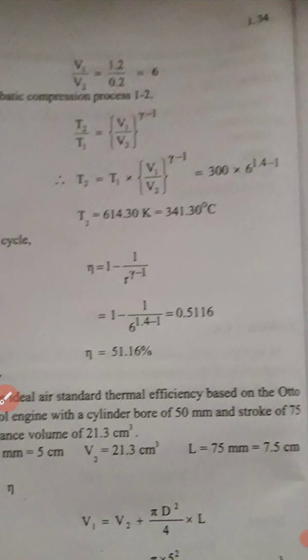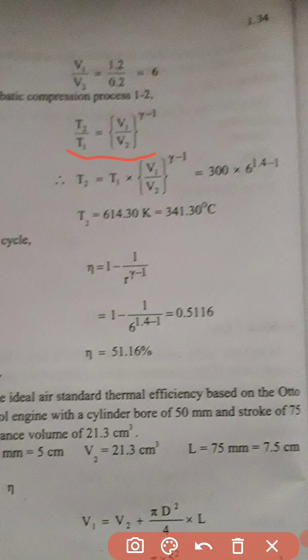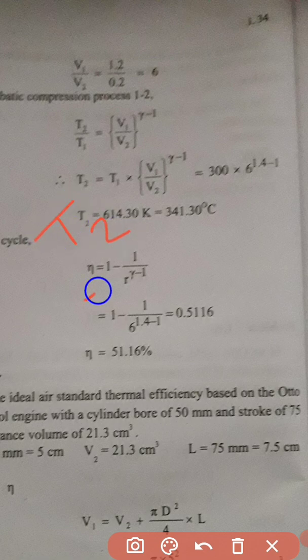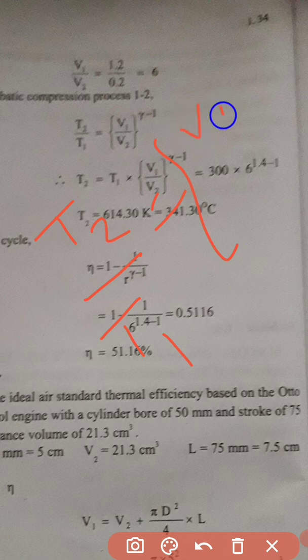Now we have the equation for temperature at end of compression: T2 by T1 equals (V1 by V2) raised to the power gamma minus 1. So T2 equals T1 multiplied by (V1/V2)^(γ-1).